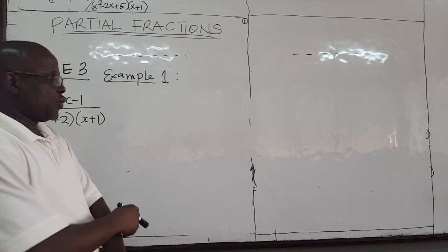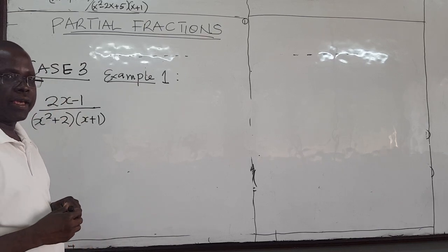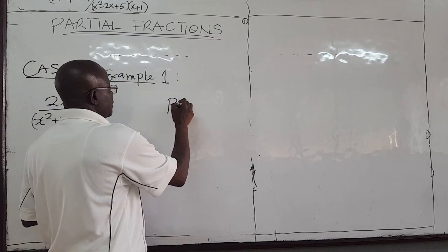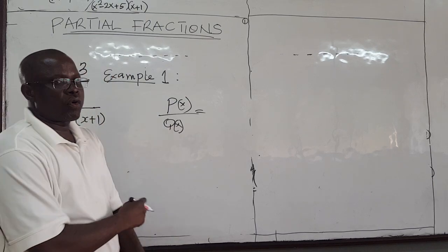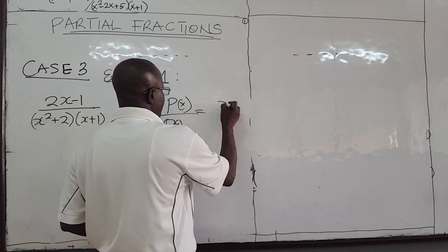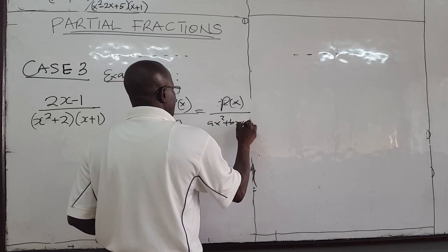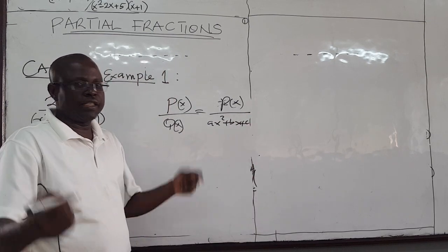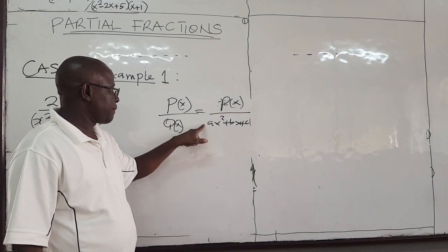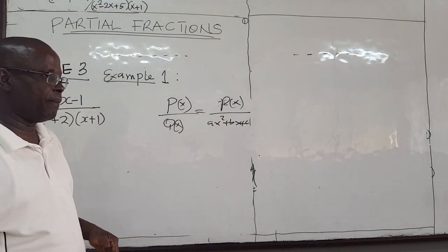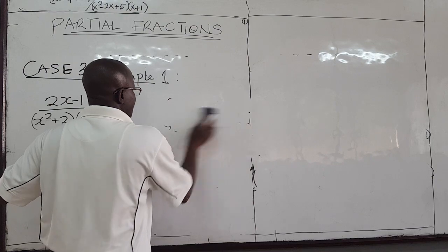Hello guys. So we are now on Case 3. Remember Case 3 — I said that we have a fraction p of x over p of x, where p of x is a quadratic and it's irreducible. So you have something like p of x all over some ax squared plus bx plus c times some other linear factor, and this guy cannot be factorized. You can't reduce this into linear factors. So what about that case? How do you decompose the fraction into partial fractions? So that is an example of that which we want to look at.